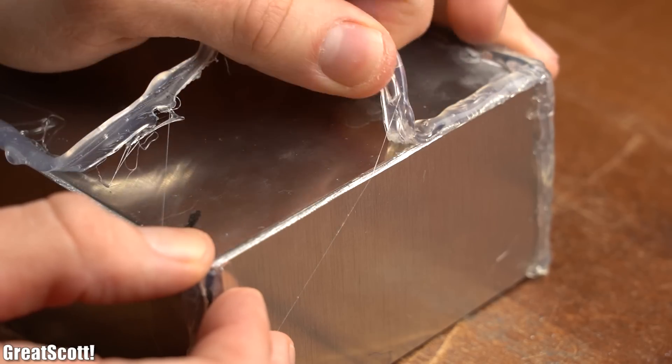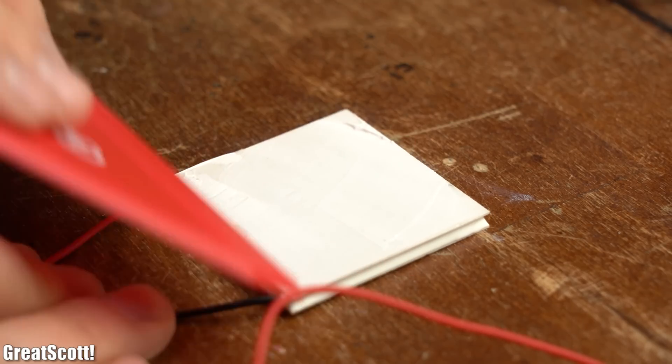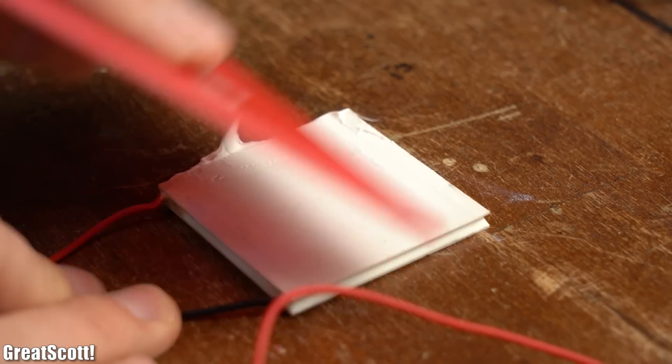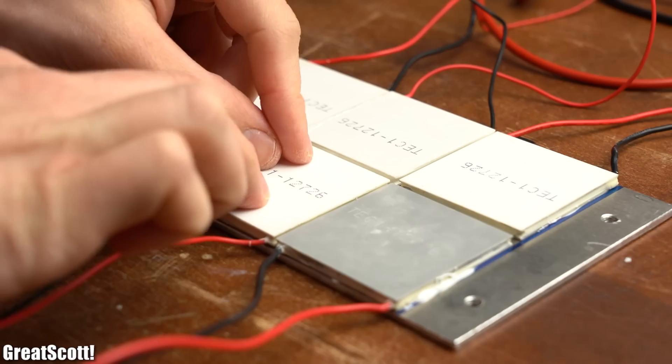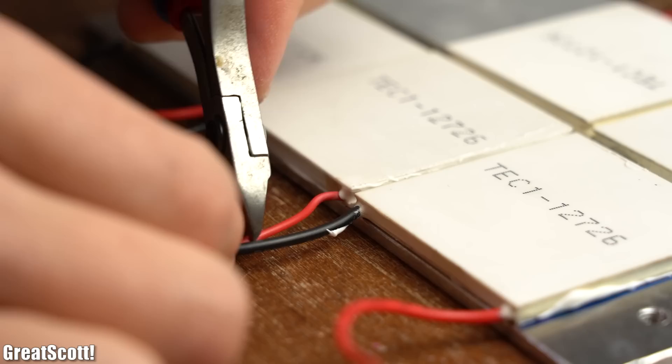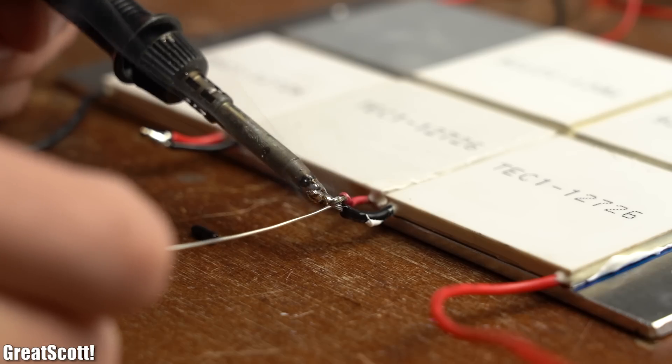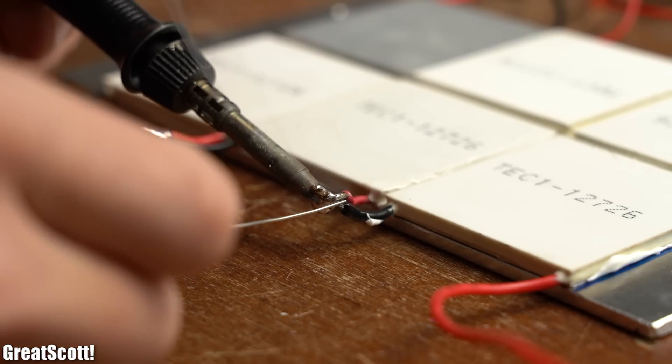And finally moved on by adding heatsink plaster to the unlabeled side of the modules and pressing them onto the thicker aluminum heatsink. Next I shortened certain wires of the modules in order to connect them all in series with a bit of solder according to this scheme.